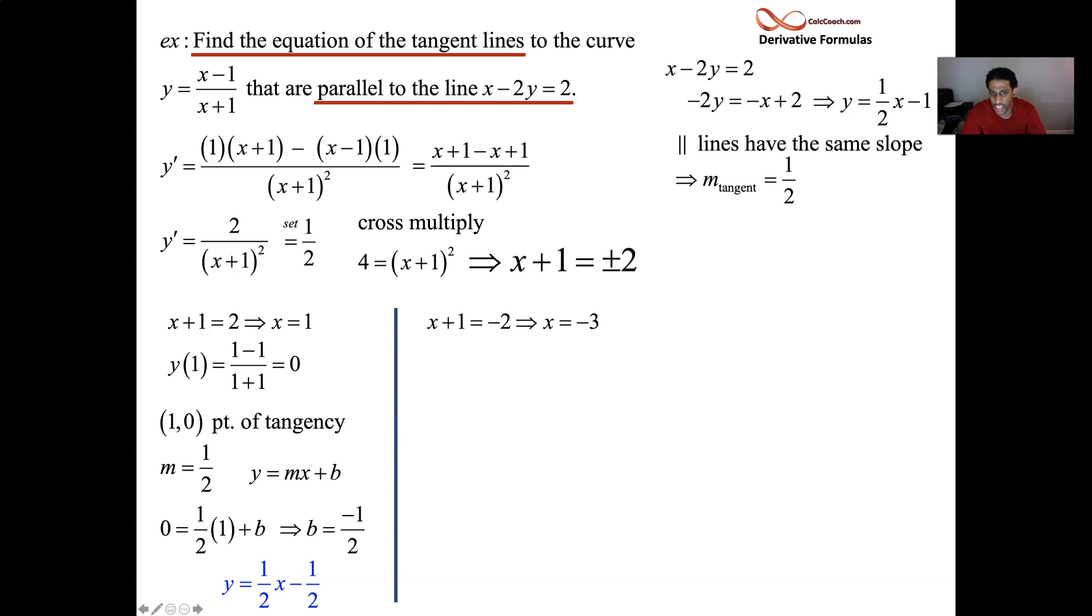And the other solution would be x + 1 = -2. Subtract 1: x = -3. Taking that in, -3 - 1 is -4 up top, -3 + 1 is -2 underneath, so that ends up being 2 when you divide. So the point is (-3, 2). Slope is still 1/2. Using y = mx + b: the x is -3, the y is 2. So 2 = (1/2)(-3) + b. Add that 3/2 over, so b is 7/2. So y = (1/2)x + 7/2.